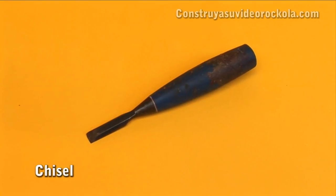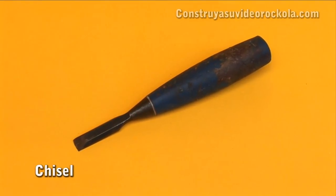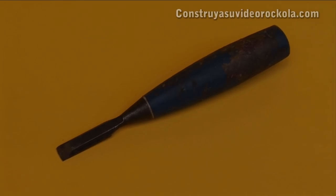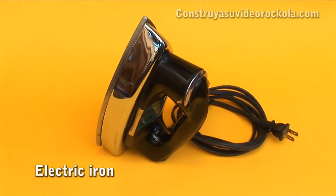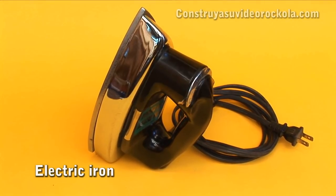Chisel - tool used for cutting bakelite. Electric iron - used to iron the drawing board until it's transferred to the bakelite.